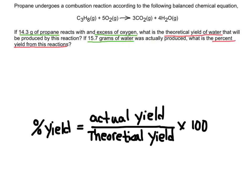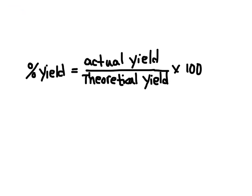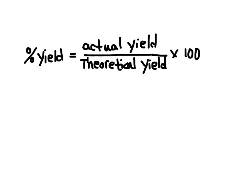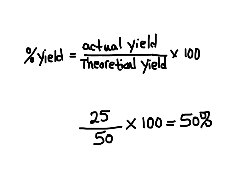Now you do this type of calculation all the time. If you think about the last test you took, let's just say it was out of 50 questions. Theoretically you were hoping to get 50 out of 50 correct. Let's say that you only got 25 questions correct. What percentage did you get on this test? Well you got 50%. So it works the exact same way as that. We look at the theoretical, what were we expecting versus what we actually got.